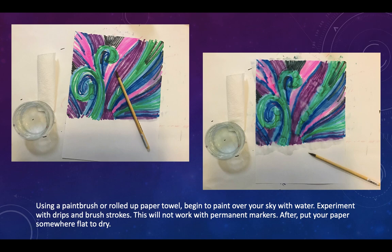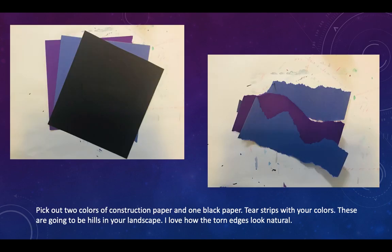When you're done, put your paper somewhere flat to dry. Pick out two colors of construction paper and one black paper. We're going to start to make our hills — tear strips with your two colors; these are going to be the hills or mountains.